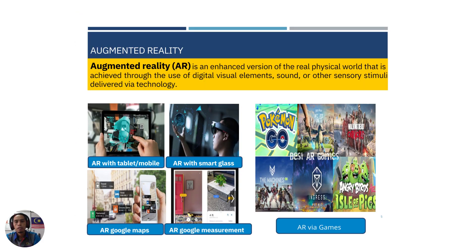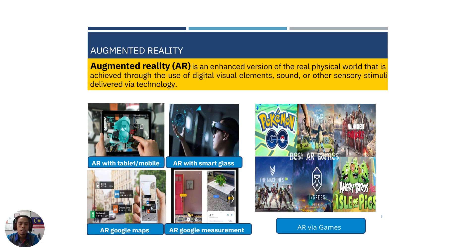Augmented reality is an enhanced version of the real physical world that is achieved through the use of digital visual elements, sound, or other sensory stimuli delivered via technology. Augmented reality can be used with a tablet and mobile phone. It can also be used with a smart class. We can easily see the application of AR in Google Maps, measurements, and also in many games.